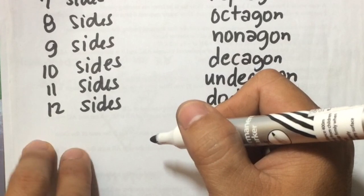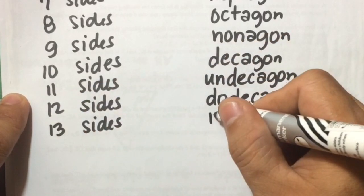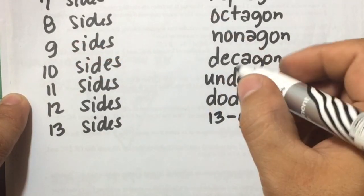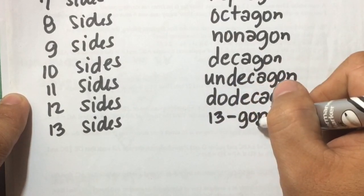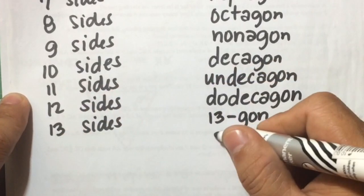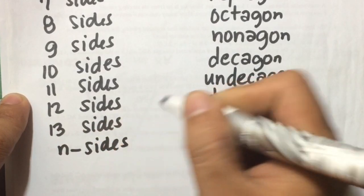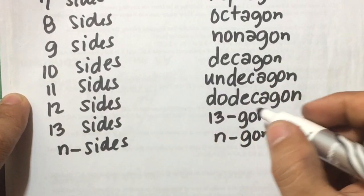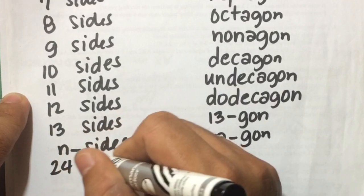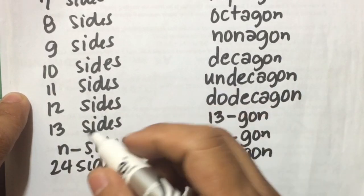Now for a number of sides greater than twelve — for example, thirteen sides — you can name that one as thirteen-gon. So for thirteen and up, you name it as the number followed by -gon. So if we're going to have a number of sides greater than twelve, you can just call that one as n-gon, where n is the number of sides. For example, if we're going to have a polygon with twenty-four sides, you can name that one as twenty-four-gon, and so on, depending on the number of sides.